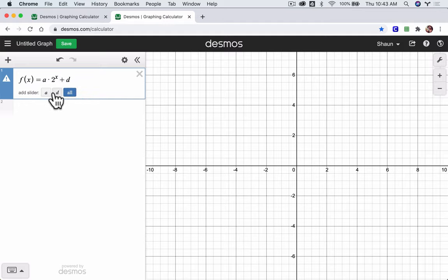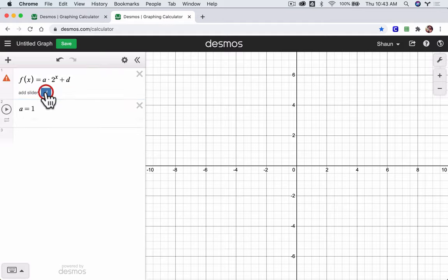Now it does offer to add sliders for everything, but I just want to add a slider for a and for d. Now it's worried. Too many variables. Try defining d.